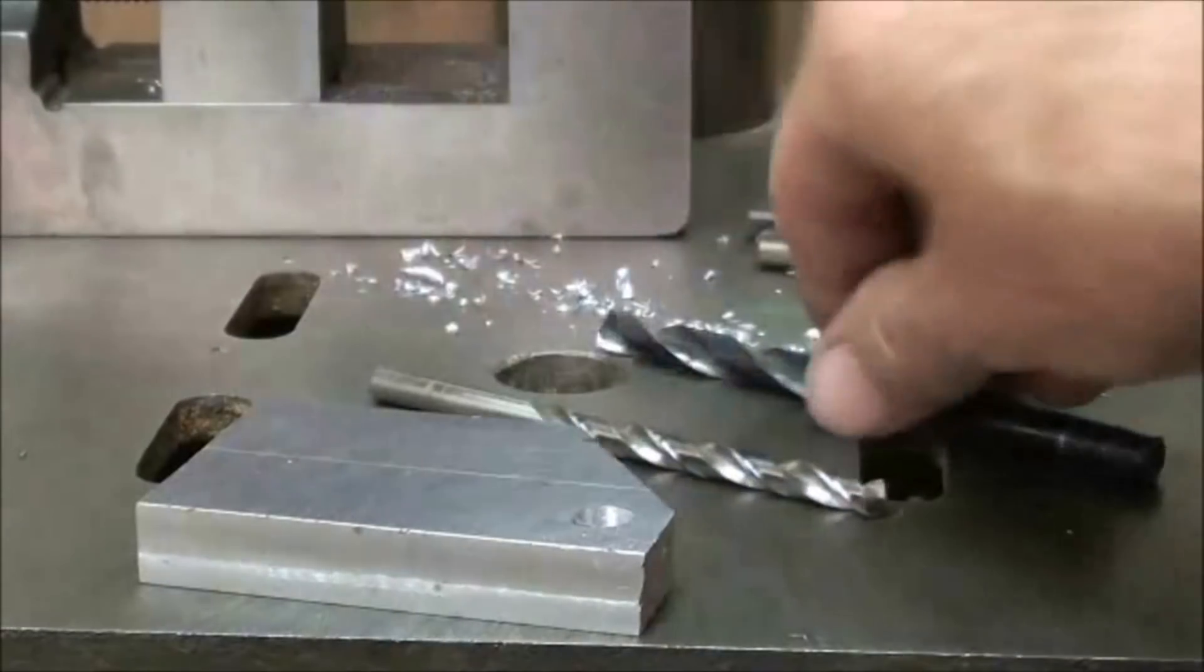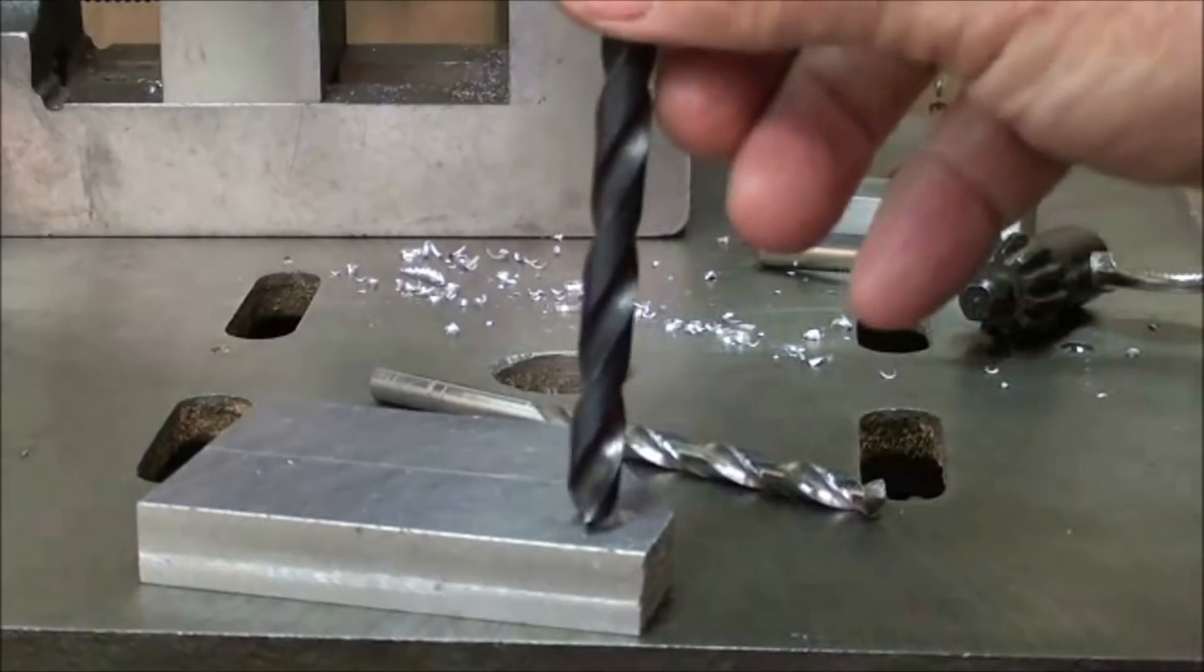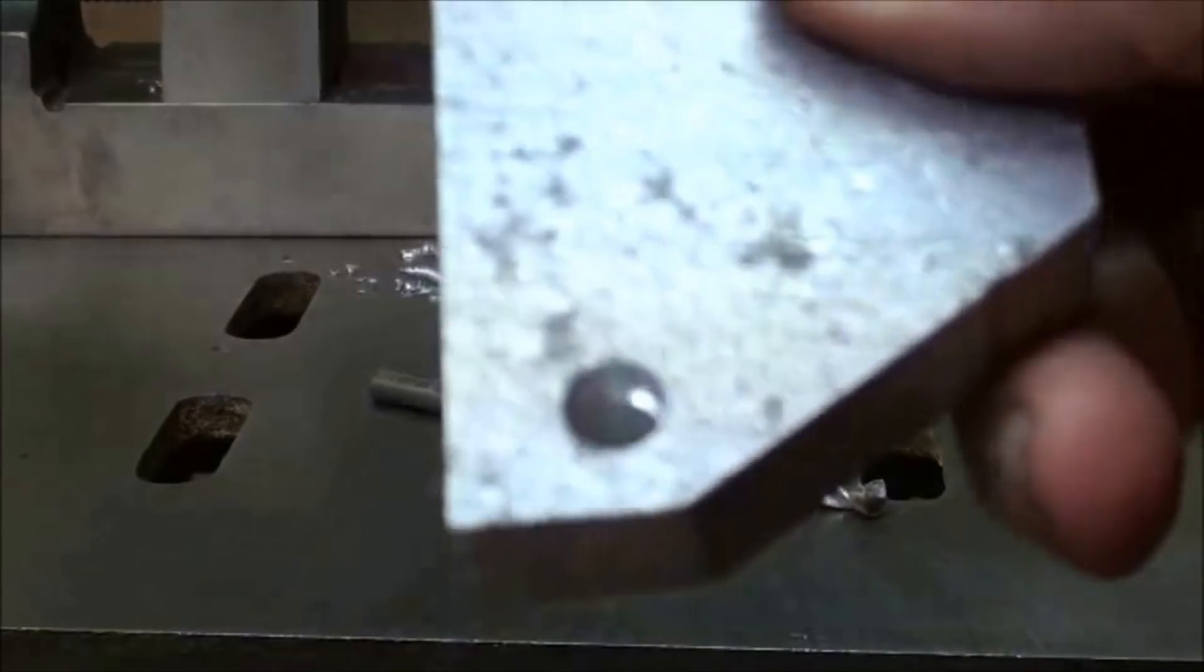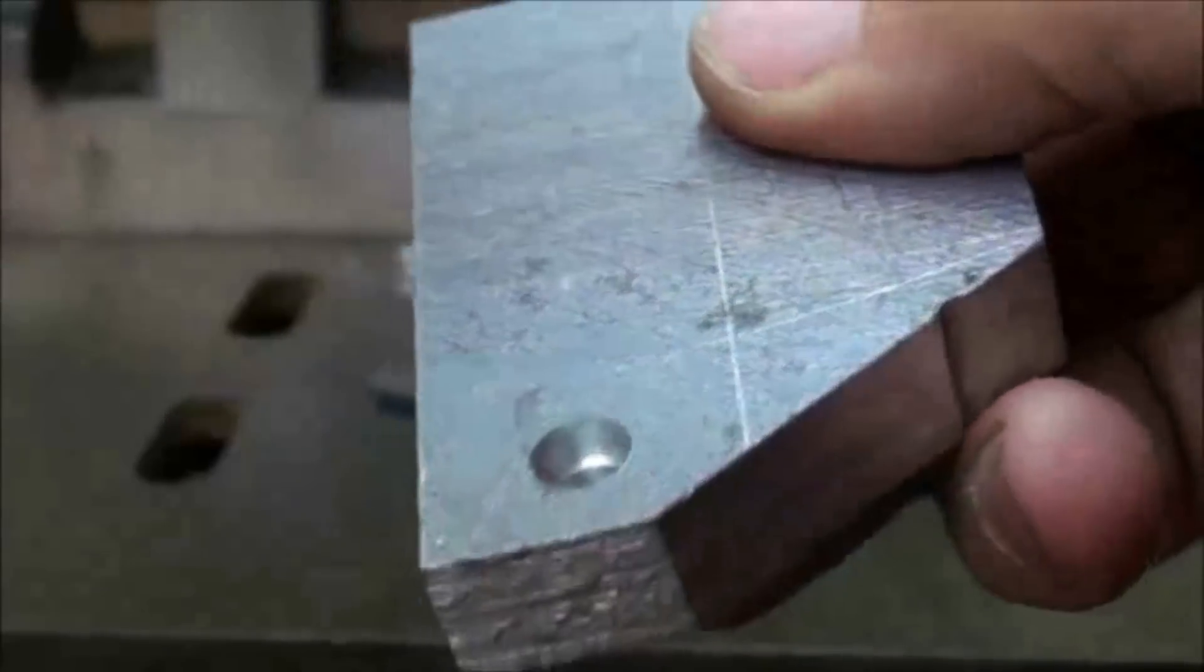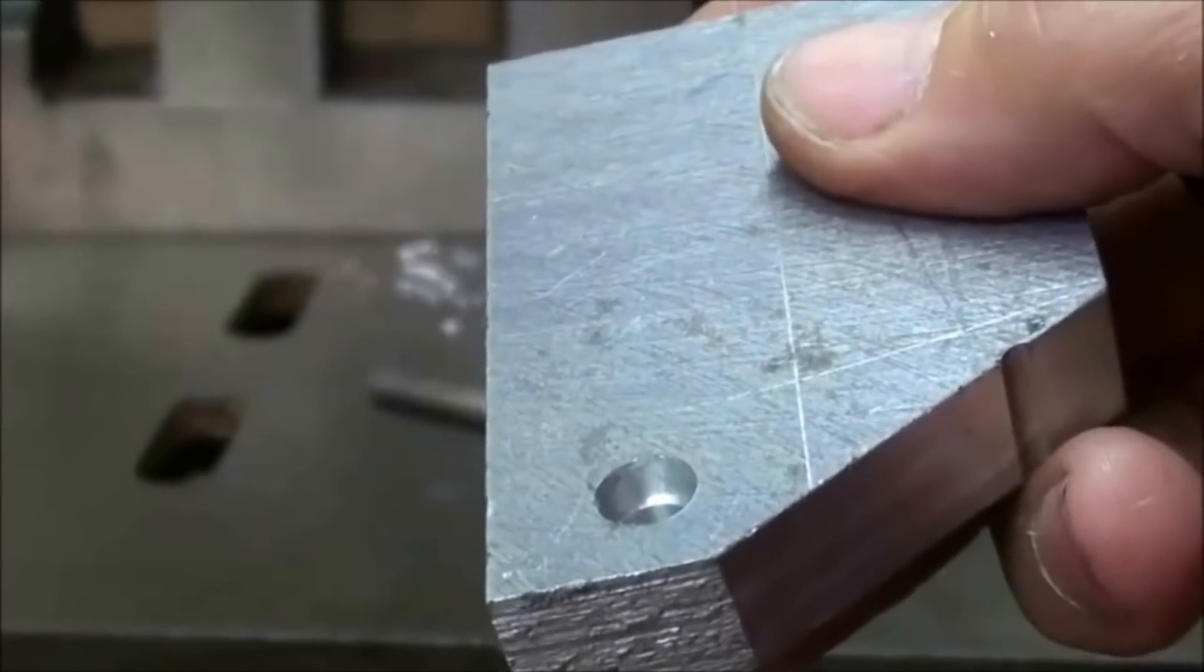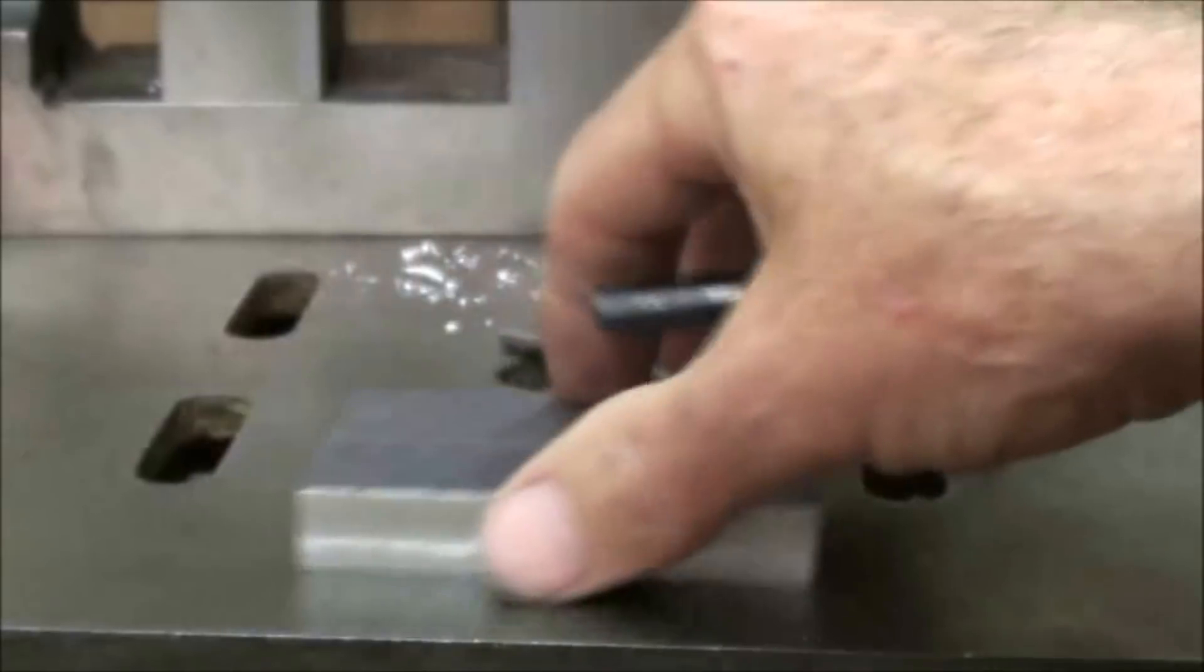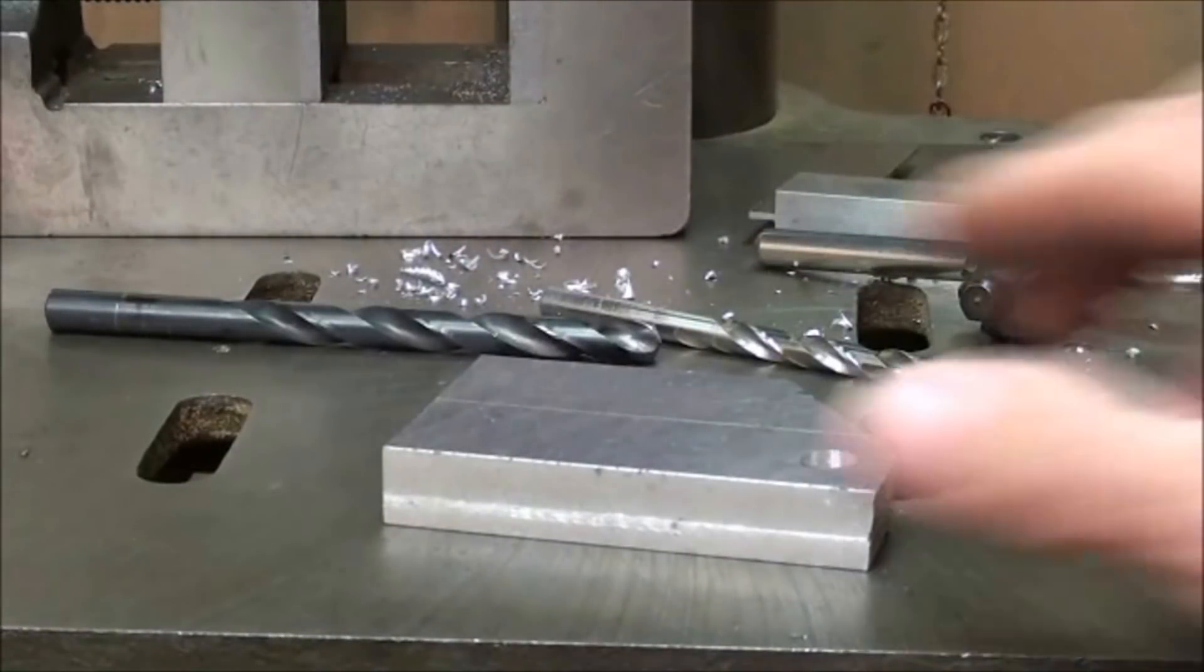And then I counter bore it, or used the clearance size, which is 5-16, and I re-drilled it, and I went approximately halfway through. Can you see that? Now that will help the tap start straight. You provided a guide for it, I guess you could say. That will in no way, on thicker stock like this, affect the strength of the thread.